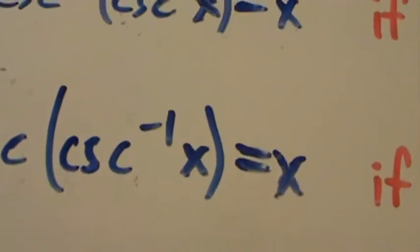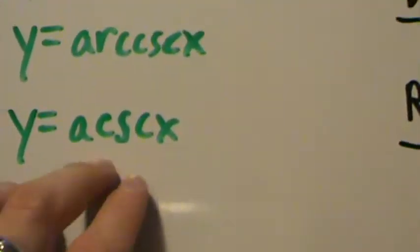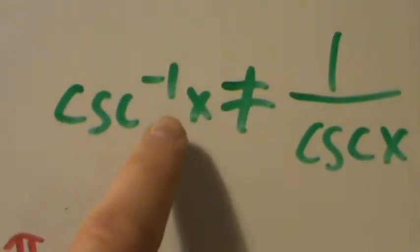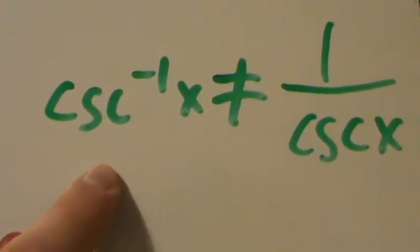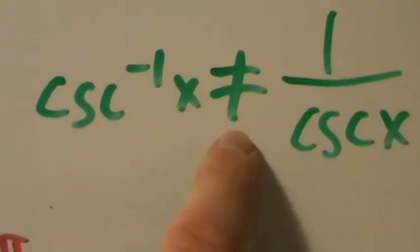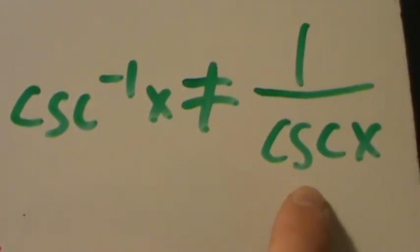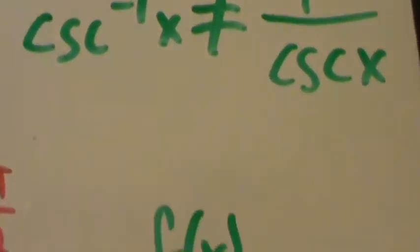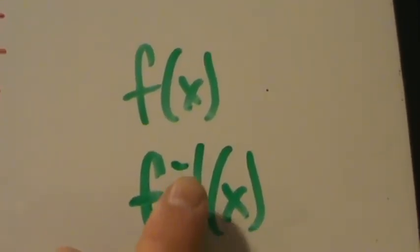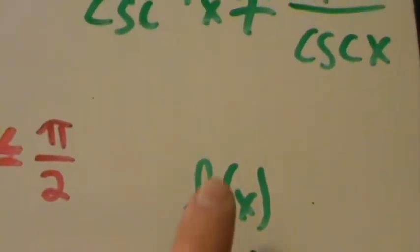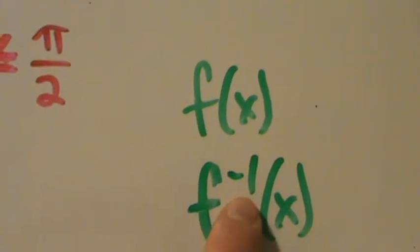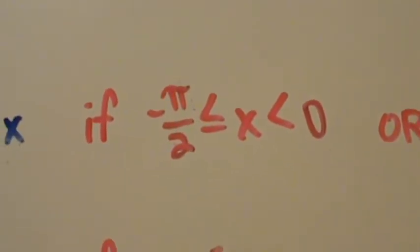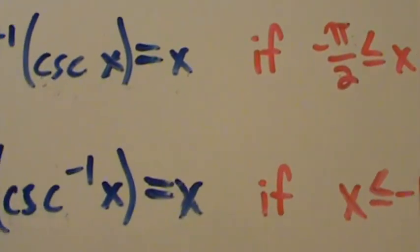A quick note about the notation: the negative 1 in the exponent does not mean the same thing it usually means for algebraic expressions. Normally that negative 1 exponent means a reciprocal, but for trig functions it doesn't mean that. Cosecant inverse of x is not equal to 1 over cosecant of x — and 1 over cosecant of x is actually sine of x, which is not the same as the inverse cosecant of x. This notation comes from the general convention that the inverse of a function f of x is denoted f inverse of x with that negative 1 exponent. That's pretty much it for the inverse cosecant function — some more properties and examples of evaluating inverse trig functions are coming up in the next video.